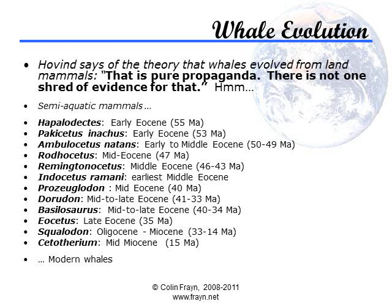Whale evolution is another fascinating story, with the earliest ancestors indeed living on land. Haplodectes and Pakicetus were both small carnivorous mammals, primarily land-dwelling. Ambulocetus was the first creature that lived a semi-aquatic lifestyle, though it also wandered around on land rather like modern-day crocodiles. However, by 47 million years ago, Rodhocetus was largely aquatic, and its descendants were increasingly so, until you get to Dorudon, first seen 40 million years ago, which was entirely aquatic and was already beginning to take on significantly whale-like qualities.